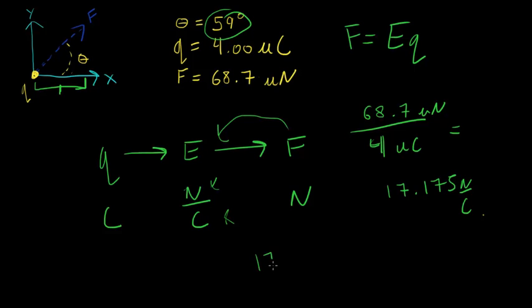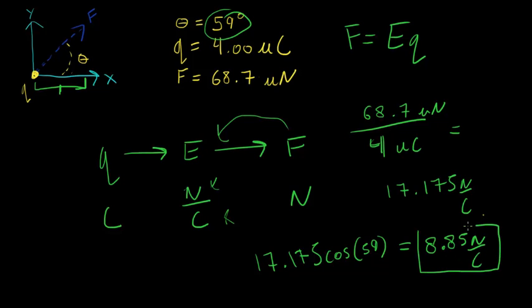So we take 17.175 cosine of 59, and that final answer is going to be 8.85, we'll round it up, newtons per coulomb, in the X direction. So that would be your final answer.